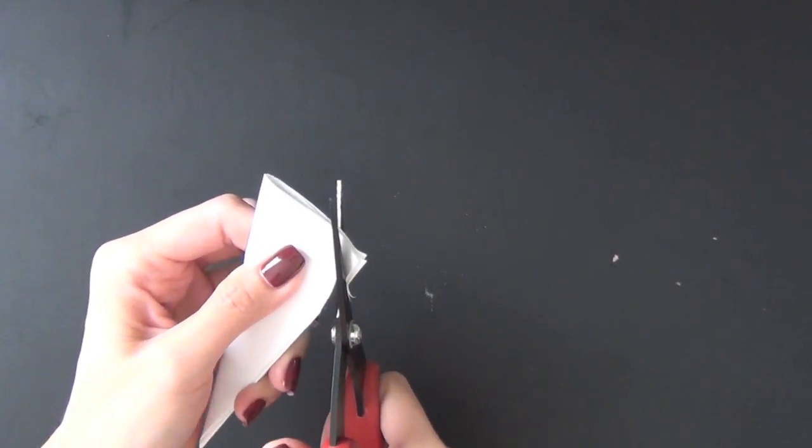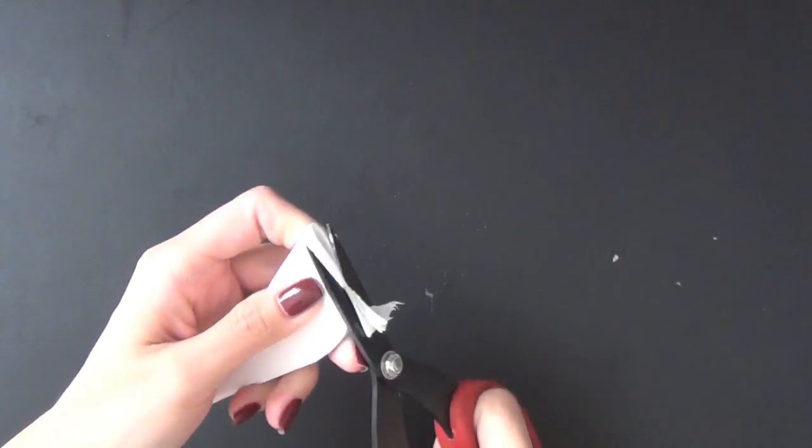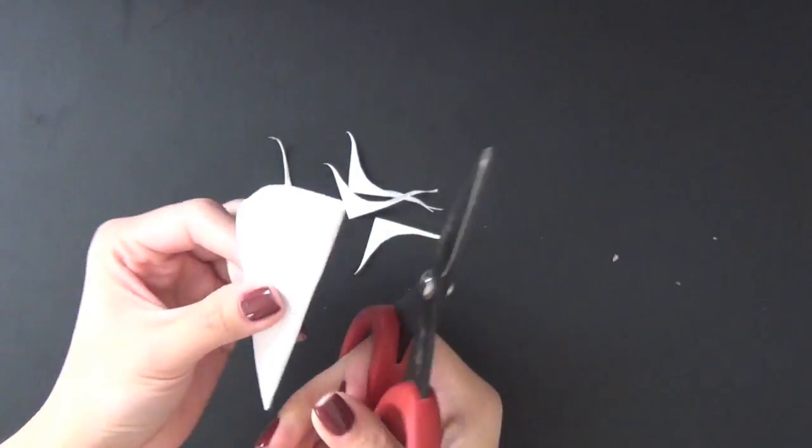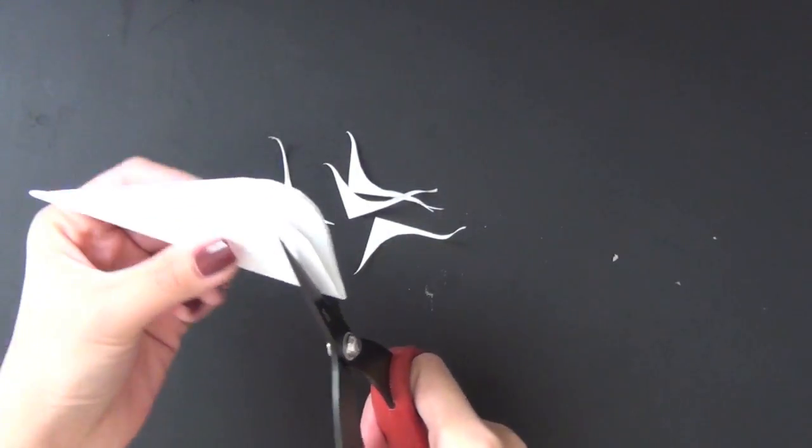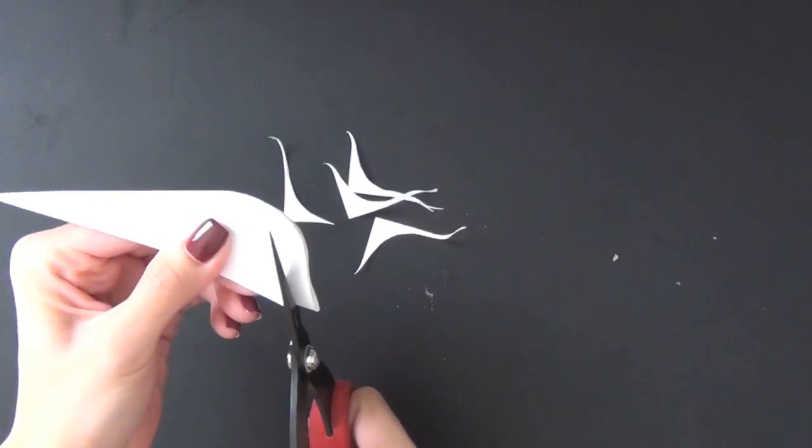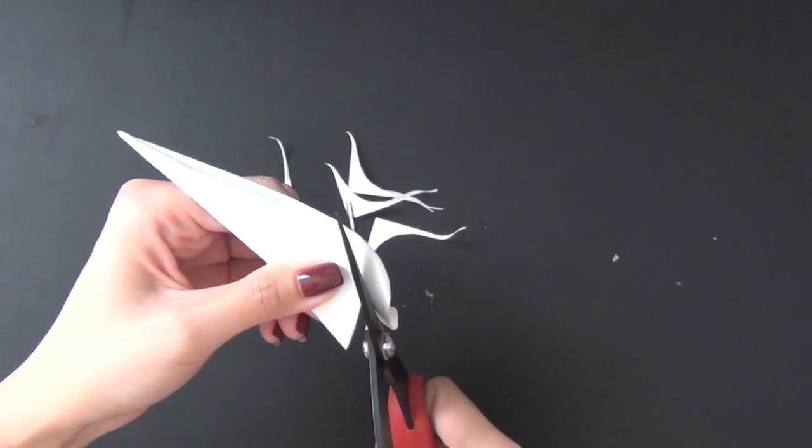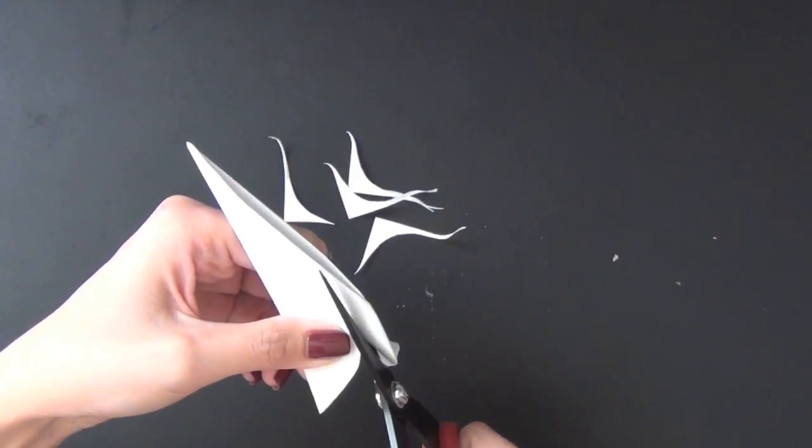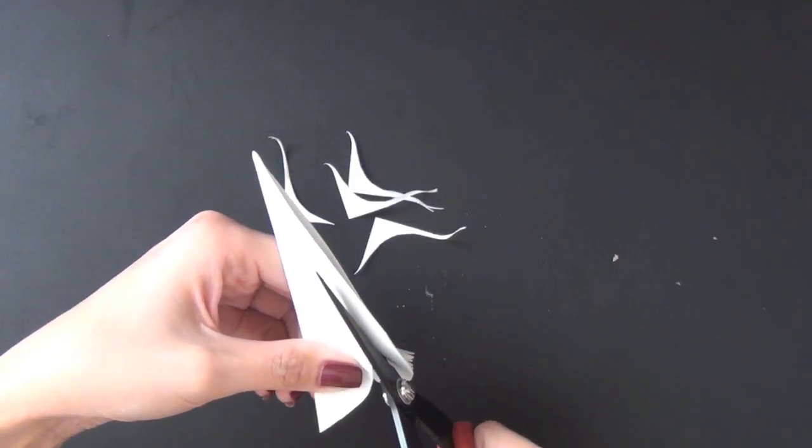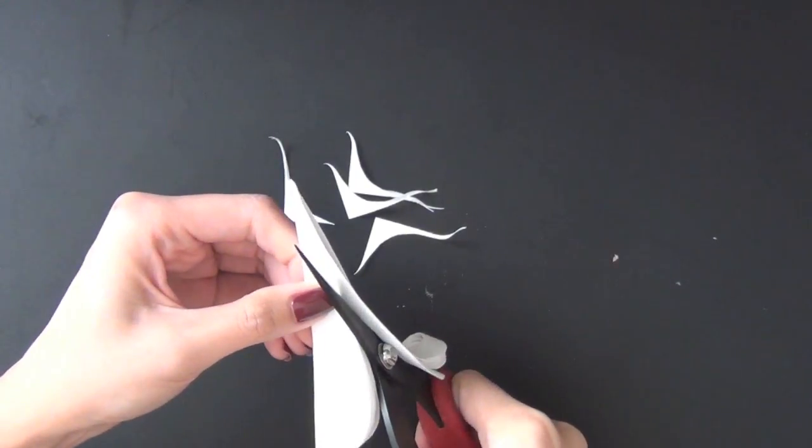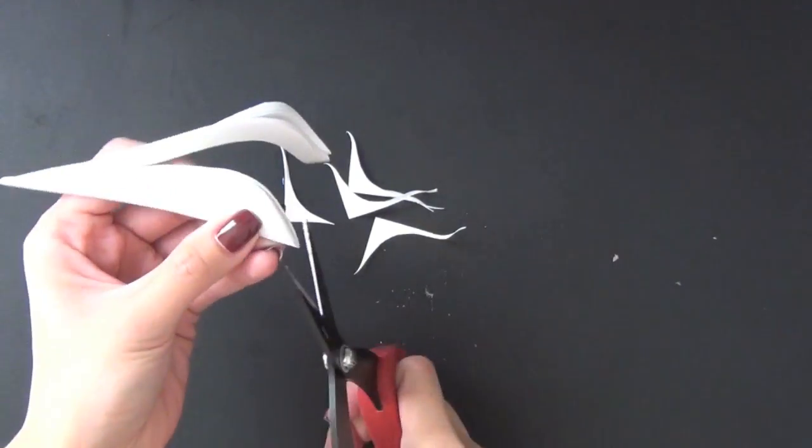At this point you can just experiment with all kinds of shapes that you like. Right now I just round up the top, and that shape will become like a petal when you open it up. Next I just place in random shapes because if you do this a few times you will get a good idea of what's going to happen after you open it up.